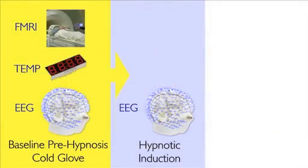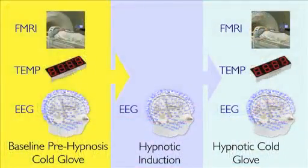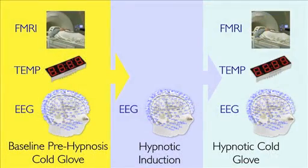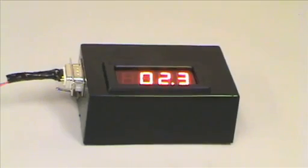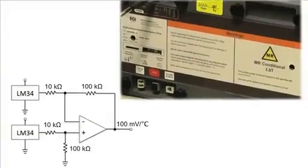Single-modality EEG data are then recorded during hypnotic induction. Simultaneous EEG fMRI cold glove data are recorded once again following hypnotic induction, and hand temperature measurements are recorded throughout the experiment using our MR-compatible differential thermometry device.